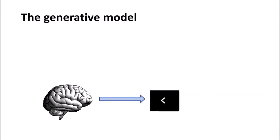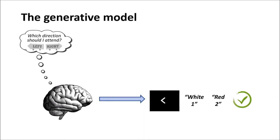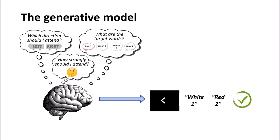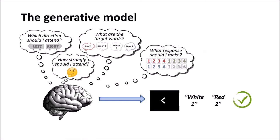In our generative model the relevant outcomes in the world are the visual cue, the color and number words spoken by the talkers on the left and right, feedback about whether the response was correct or incorrect. The things we assume people are trying to infer are the direction they should be attending, how strongly they should be attending which will become important later, the target color and number words so that's the words on the cued side and also the response that they should make.